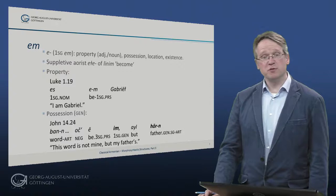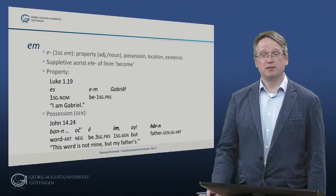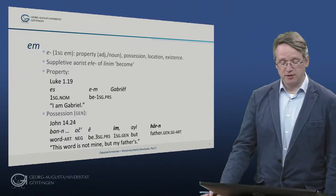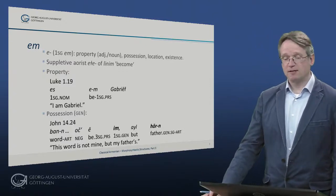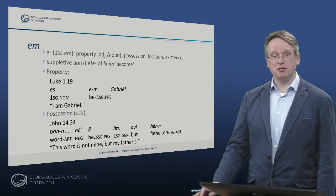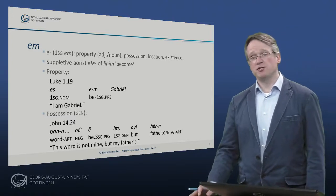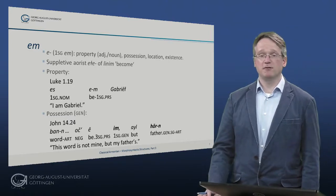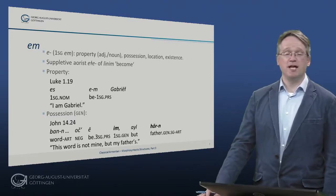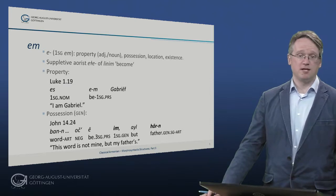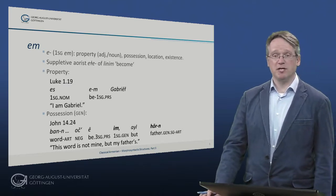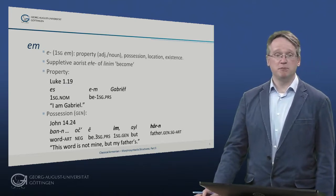The other verb, 'em' — that is the first singular — is used for predication of properties with adjectives and nouns, for possession, location, and existence. Its aorist is supplied by the verb 'lenim,' to become.